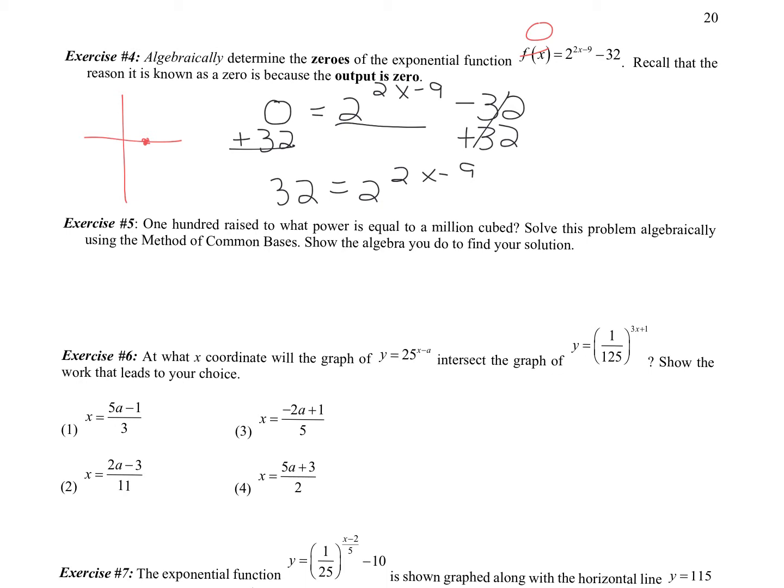So we can rewrite 32 as 2 to the 5th. The other side is still 2 to the 2x minus 9. From there I can cancel the common bases and we have 5 equals 2x minus 9. Add the 9 over, so we get 14 equals 2x. So x equals 7.